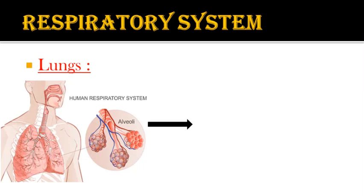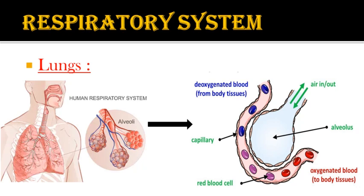The alveoli have a rich network of capillaries — small blood vessels — present around each alveolus. Alveoli are tiny air sacs at the end of the bronchioles where the exchange of gases like oxygen and carbon dioxide takes place. You can see in the right-hand side picture the exchange of gases occurring, where carbon dioxide and oxygen are exchanged between the blood and the alveolus.